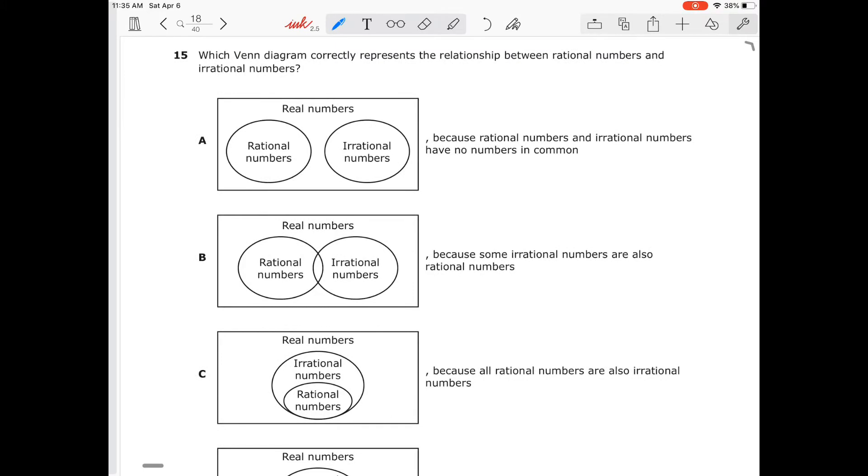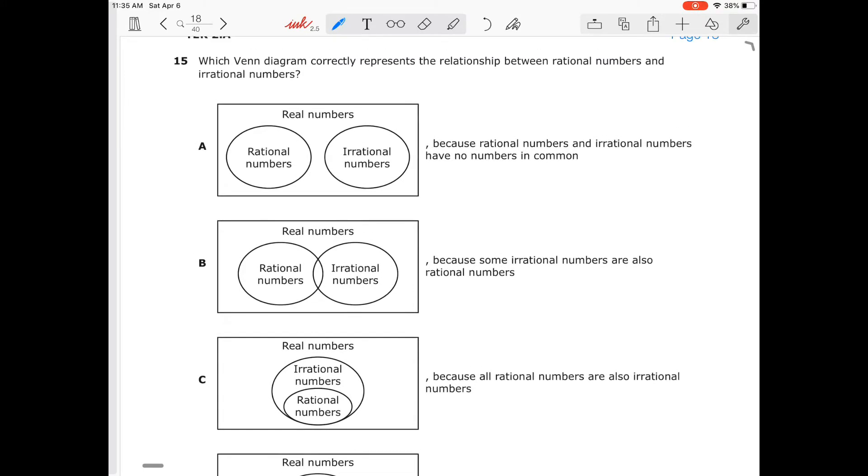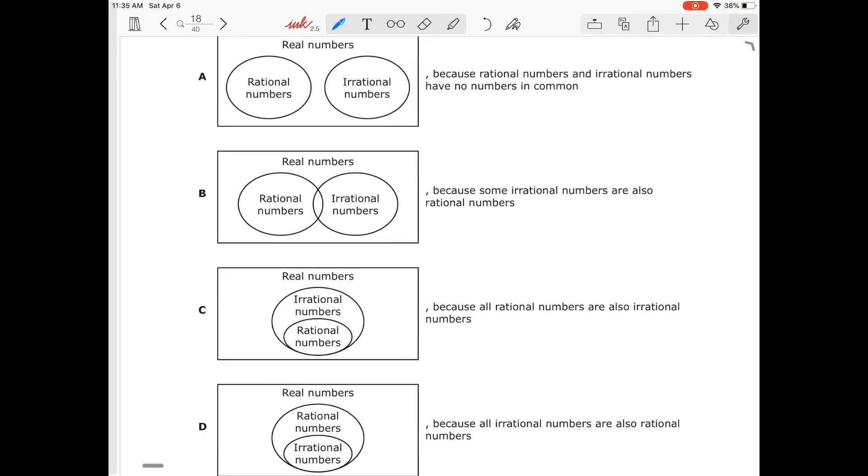So if I look at my answer choice, it says our first one says we have the real number system. And then inside the real number system, we have rational numbers and irrational numbers. And neither one of them overlap. So I can't say that there are any irrational numbers that are rational, and I can't say that there are any irrational numbers in the rational number system. But they are both real numbers. This is true. They have no numbers in common.